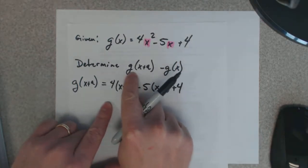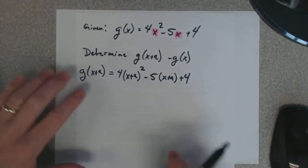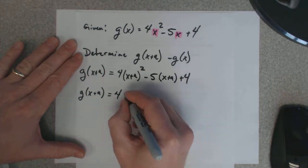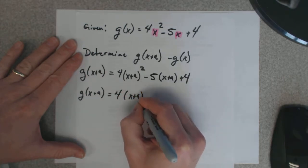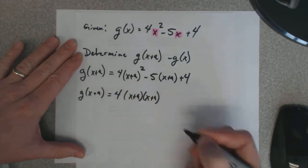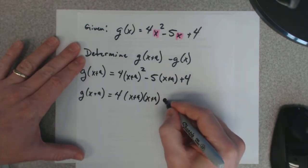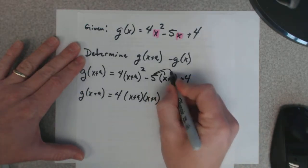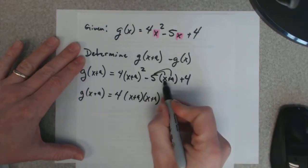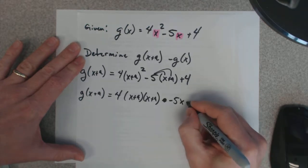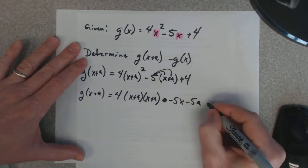So, we're just trying to find this part right here first. Let's try to clean this up a bit. x plus a times x plus a. I'm going to go ahead and distribute my negative 5. So, negative 5 times x is negative 5x. Negative 5 times a is negative 5a. And there's just a plus 4 here.